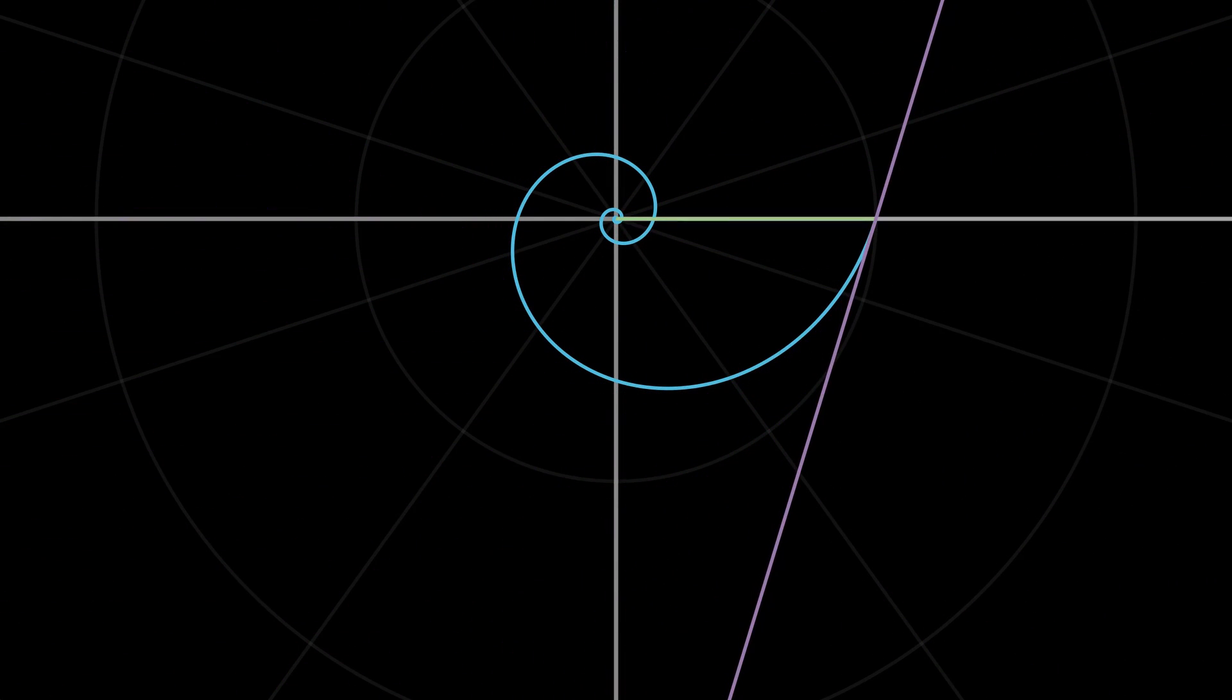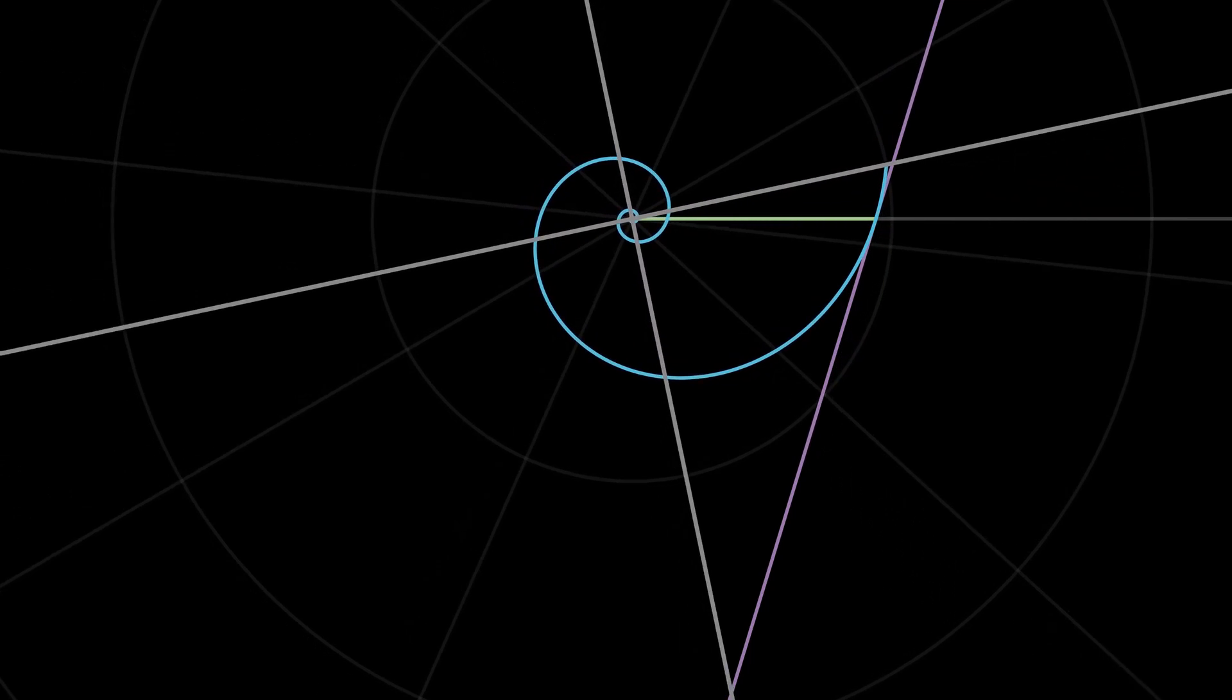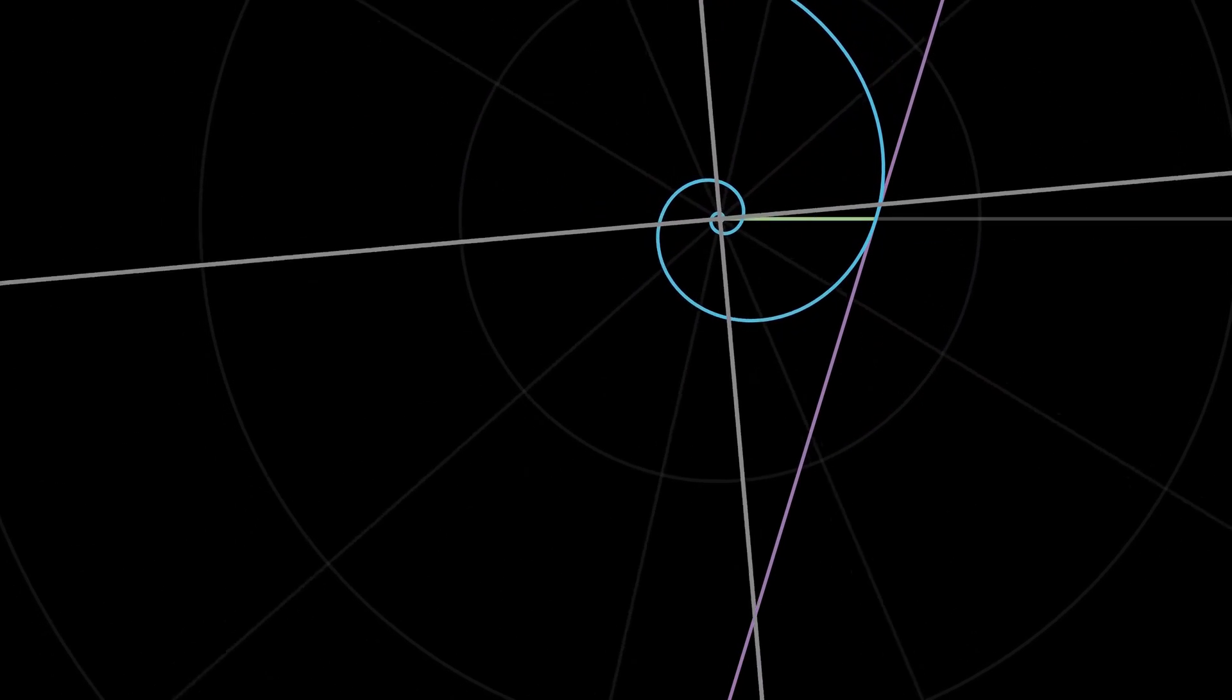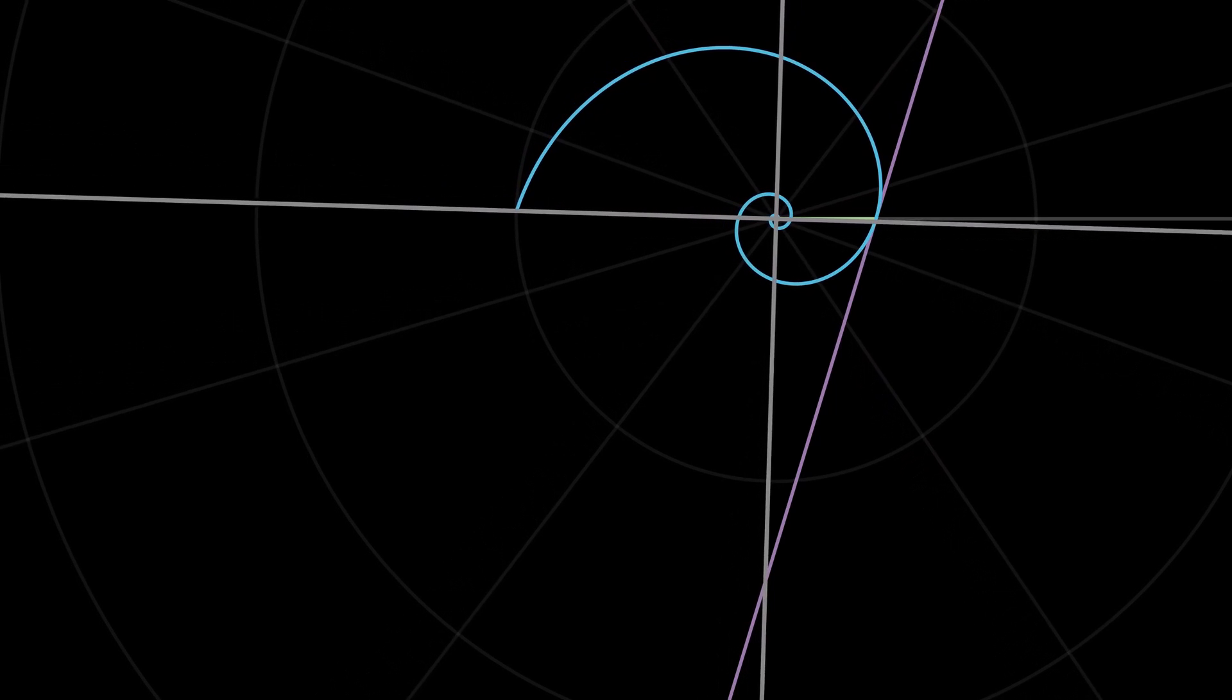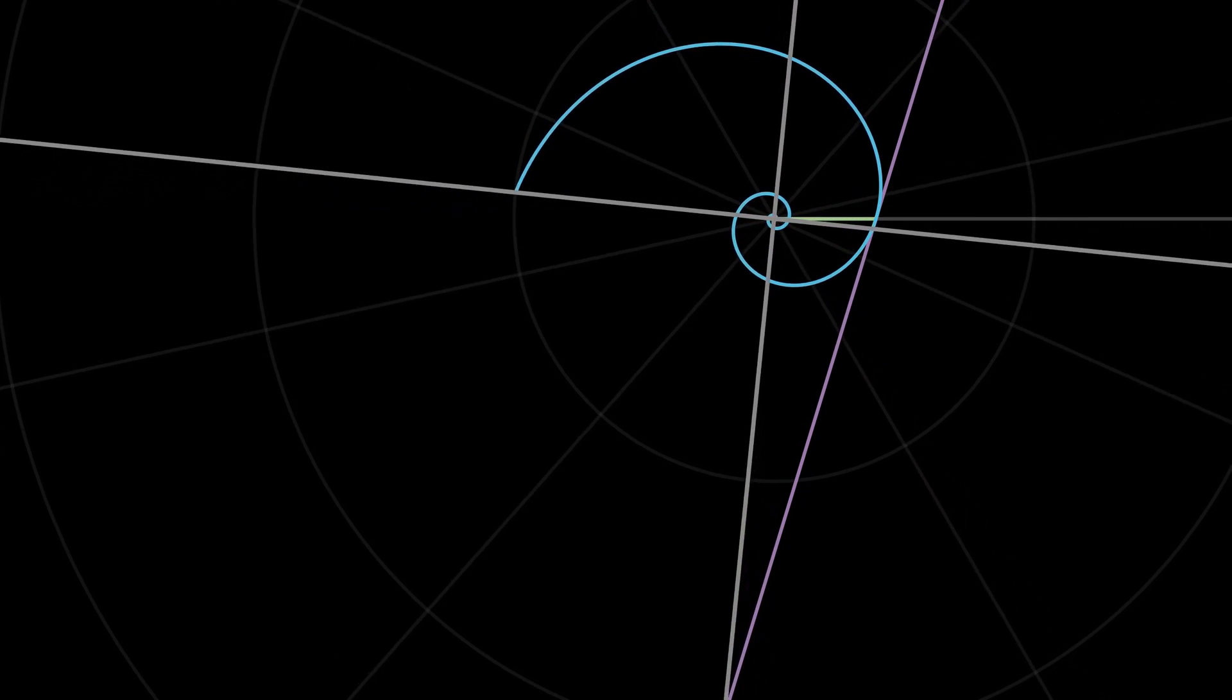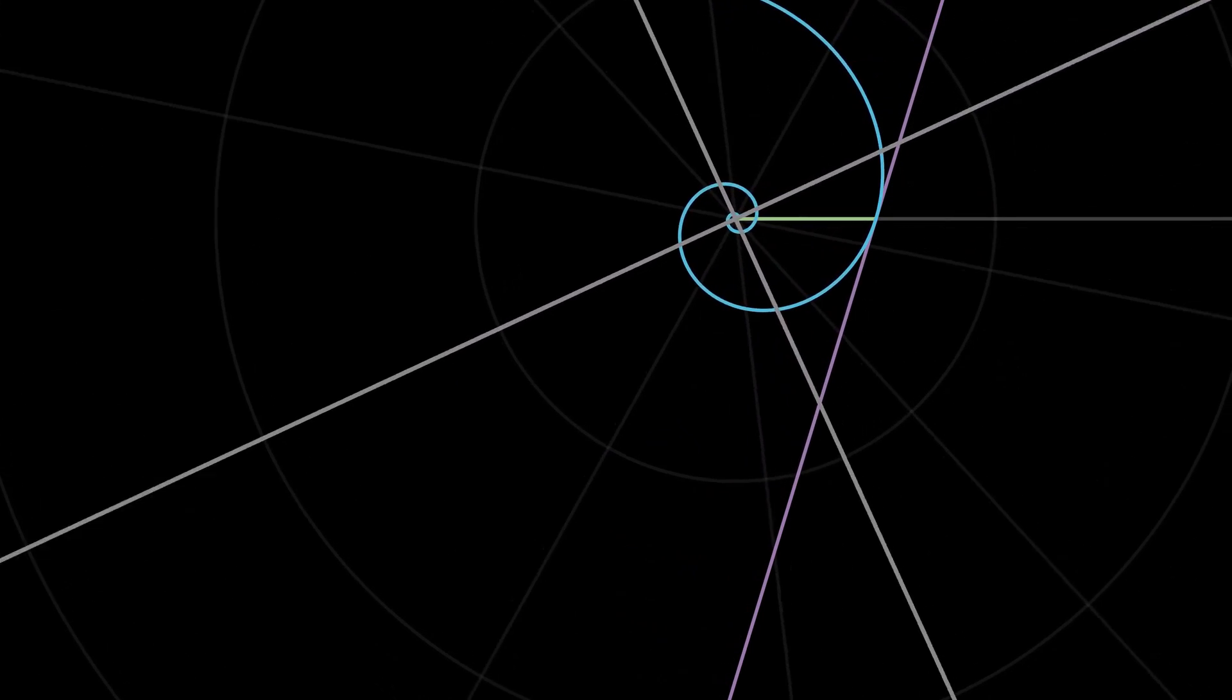But let's make a shift in perspective. Rather than making the tangent line move keeping the spiral fixed, we can achieve the same effect by fixing the tangent line and moving the rest of the plane along the line.